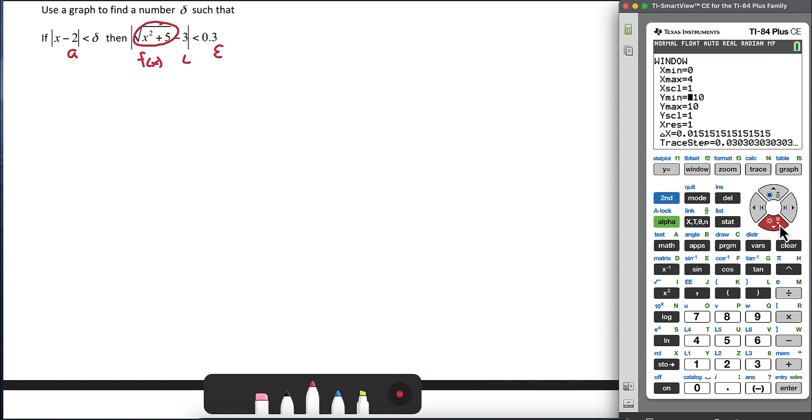And our y min, again, let's make it 0 so that we can see the axis. And the y max, we just want to make sure that it is going to include 3, and then we also want to include 0.3, our epsilon window, around 3. So let's maybe make our x max at 4. And now graph. And so we have a slightly better picture of what's going on.